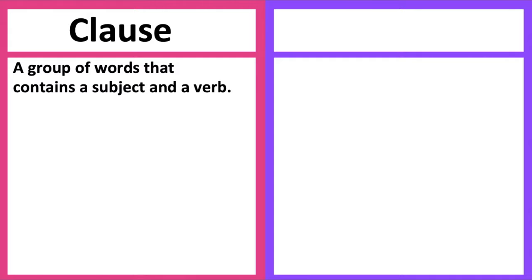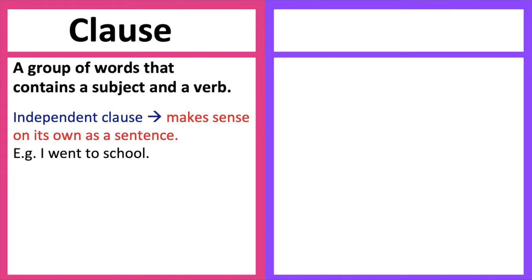There are many different types of clauses, but the two main types are independent and dependent. An independent clause makes sense on its own as a sentence. For example, I went to school. As you can see from this example, there is a subject and a verb, and it conveys a complete thought.